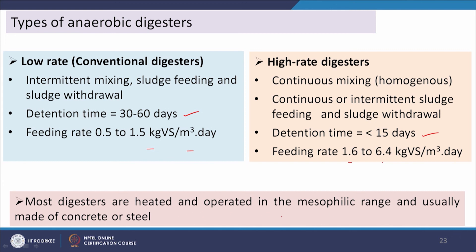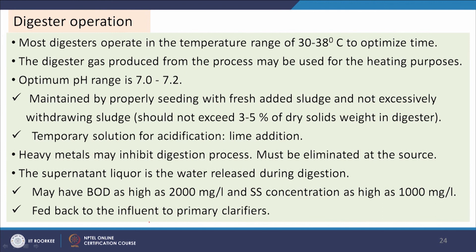Regarding digester operation: in a single-chamber digester, pH is maintained around 7–7.2 by seeding with fresh sludge, and sludge withdrawal should not exceed 3–5% of dry solids. A temporary solution for acidification is lime addition. Heavy metals may inhibit the digestion process and must be eliminated at the source. The supernatant liquor released during digestion can contain BOD as high as 1000 mg/L SS and 2000 mg/L BOD, requiring further treatment.